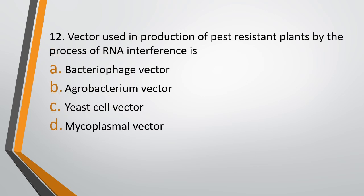Question 12. Vector used in production of pest resistant plants by the process of RNA interference is: Option A, bacteriophage vector. Option B, Agrobacterium vector.